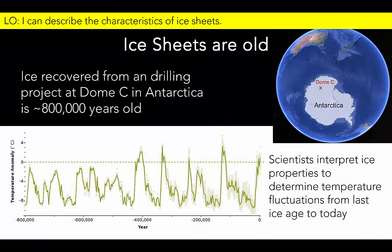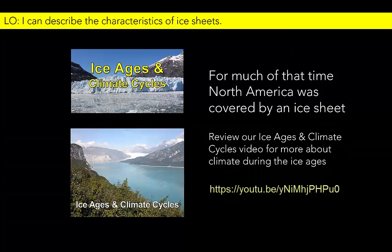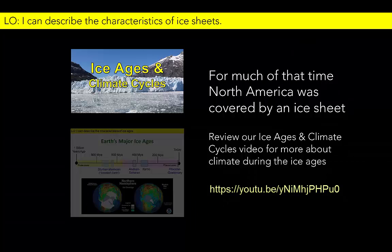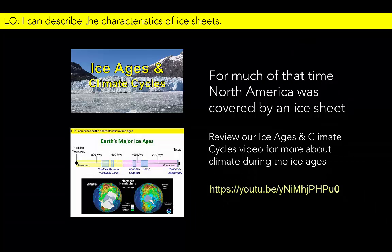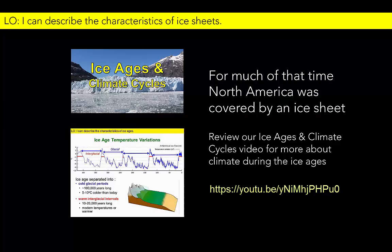Scientists can interpret the ice properties to figure out how the temperature has fluctuated on Antarctica throughout that time. The record reveals a sequence of long, cold periods separated by shorter, warm episodes. For more information about the relationship between the global distribution of ice sheets and variations in climate, watch our Ice Ages and Climate Cycles video.